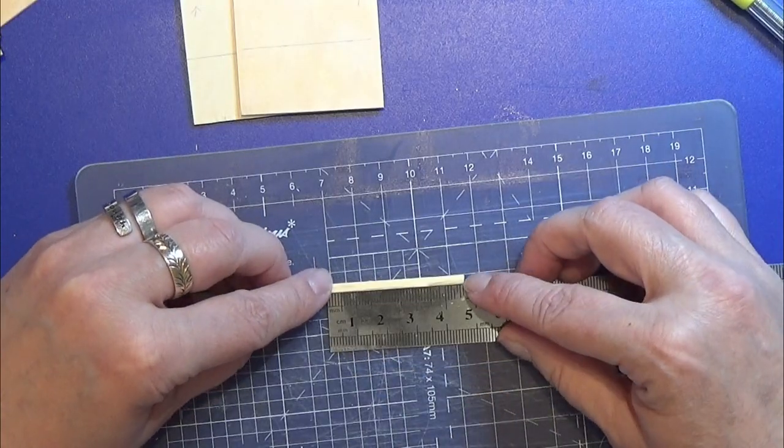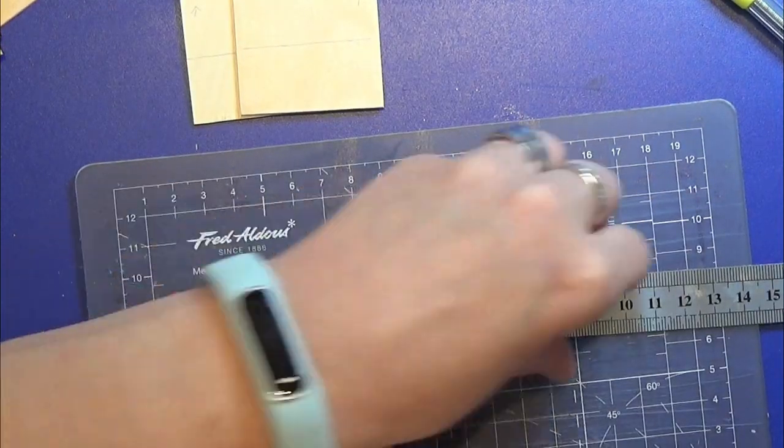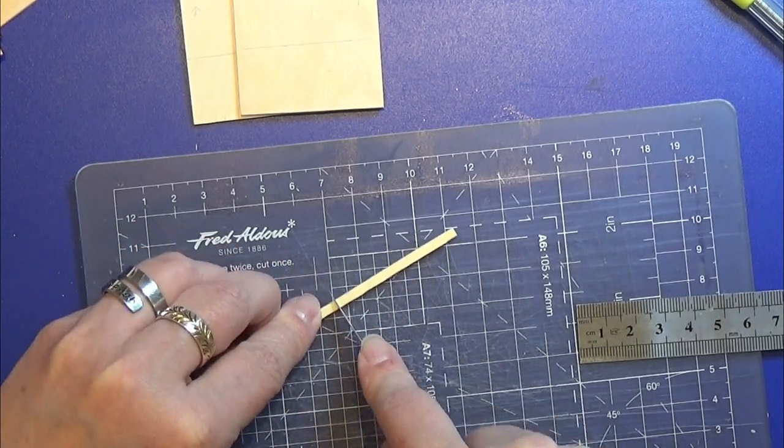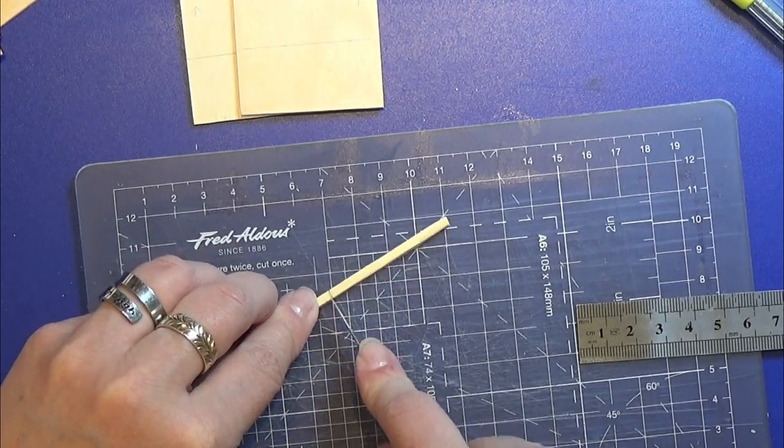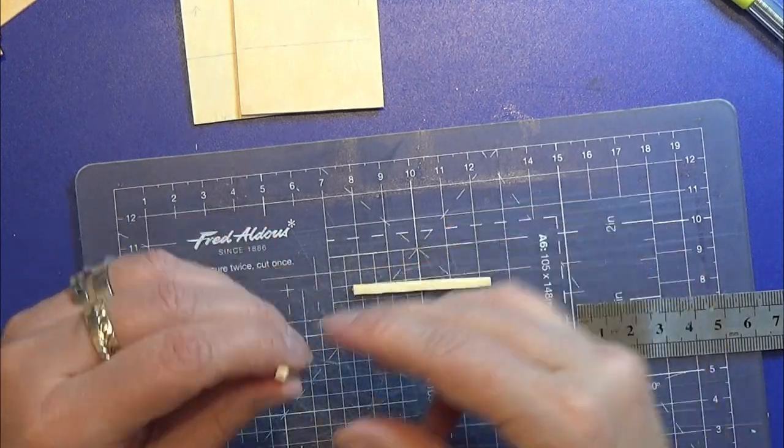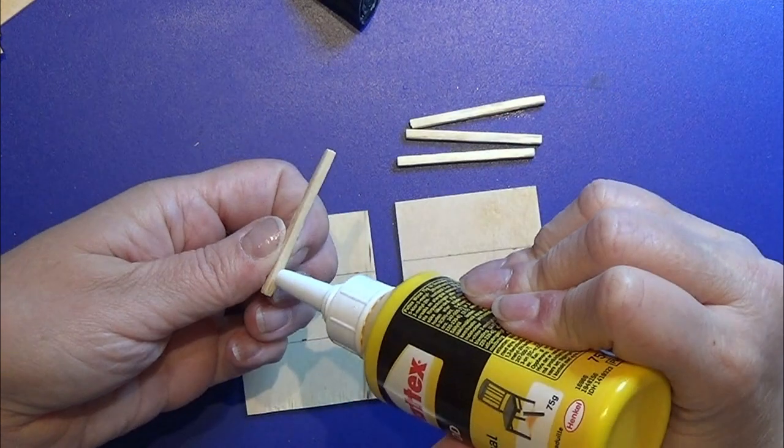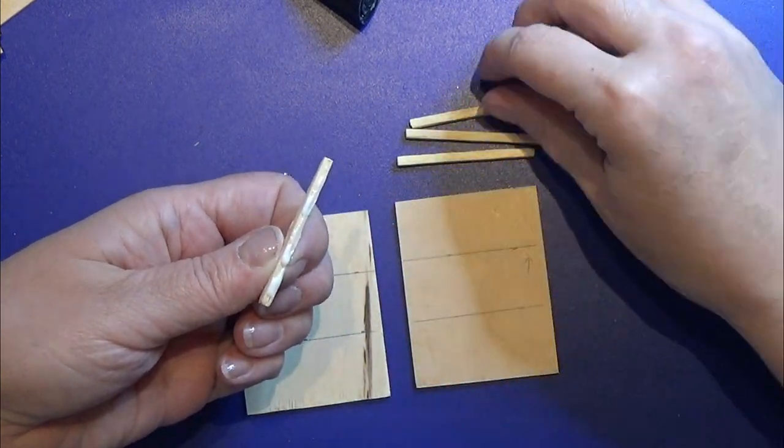I'm going to cut these matches into five centimeters and I'm making five of these for this little furniture. Four of them I'm going to glue just right above the line that I made before.